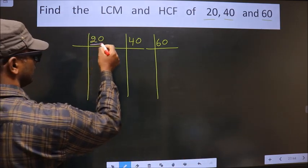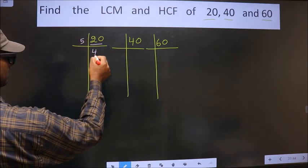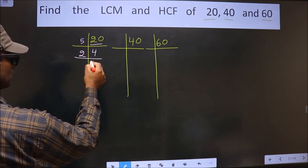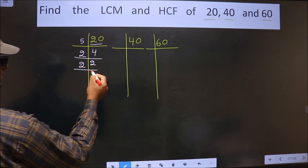Now here we have 20. 20 is 5 times 4. 4 is 2 times 2. 2 is a prime number, so we take 2 times 1.